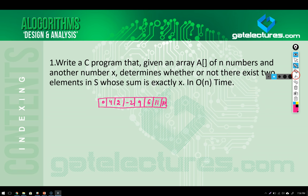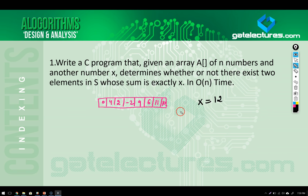Now they are asking, in this particular array, if I want to find a sum which is, let us say, x is equal to 12 — does this sum exist or not? You have to find whether any two numbers exist whose sum is equal to x equals 12. To solve this problem, there can be many algorithms which exist, and this is one of the very easiest problems that we are going to solve in algorithms.